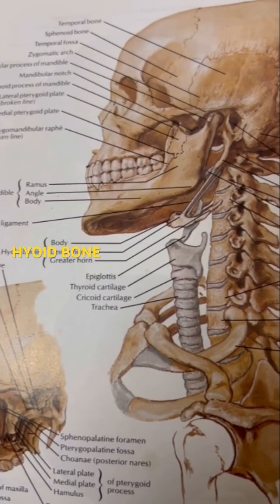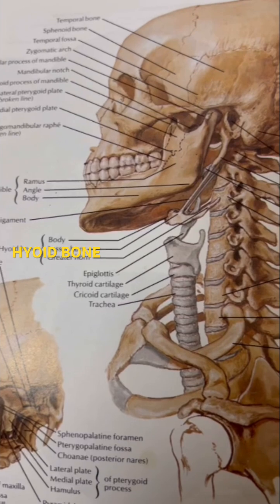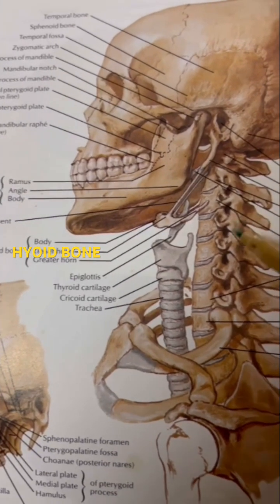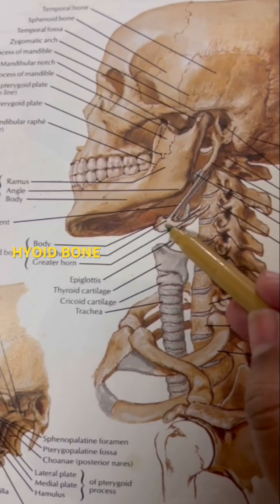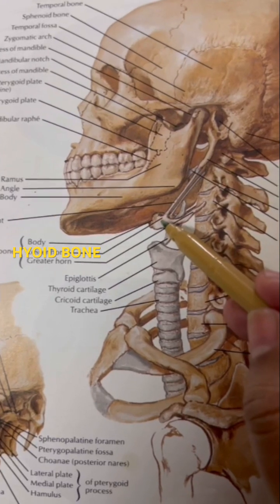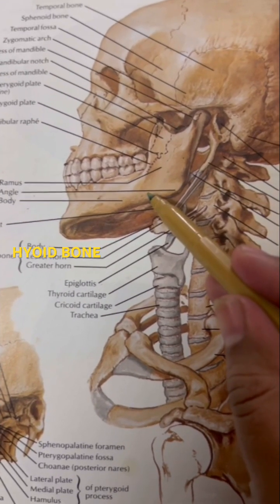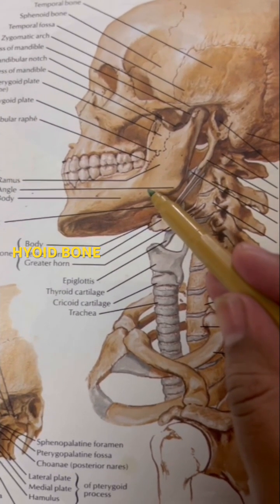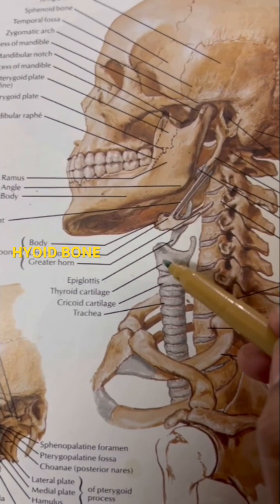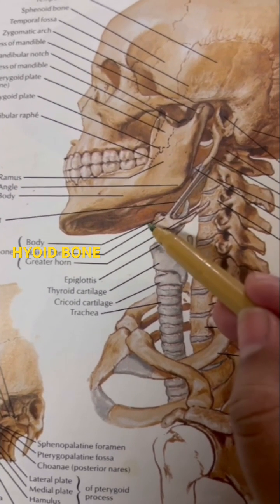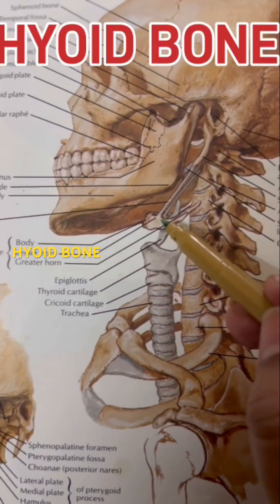Today our topic of discussion is the hyoid bone. As you can see from this diagram, the hyoid bone is situated in the anterior part of the neck, below the mandible, or between the chin and the thyroid cartilage. It's a U-shaped bone — small but significant.